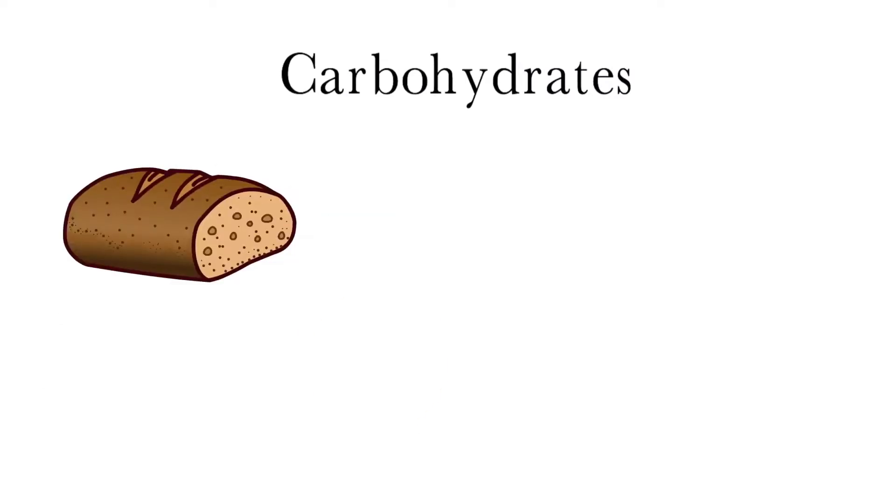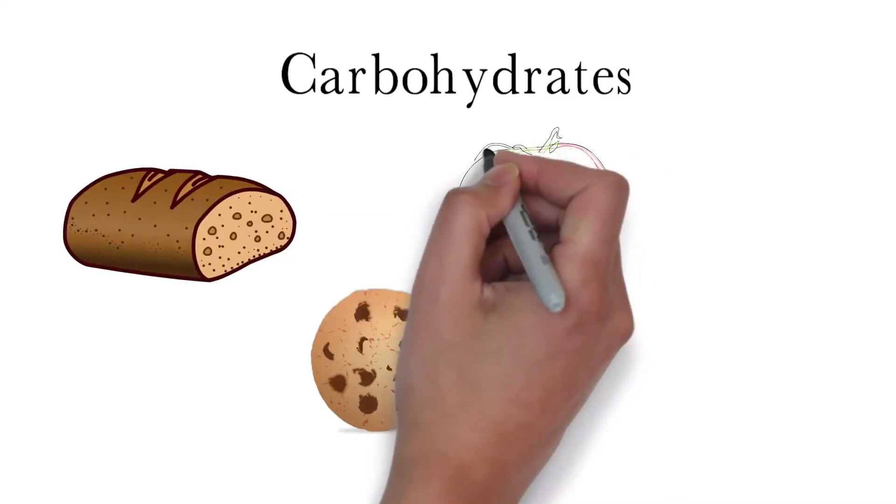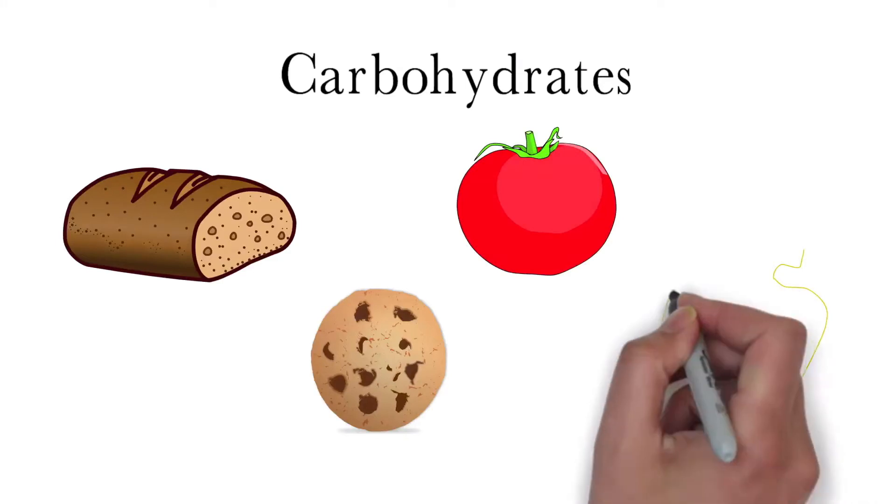Carbohydrates are one of the three main macronutrients in the human diet. They come in many varieties, including breads, baked goods, and vegetables.